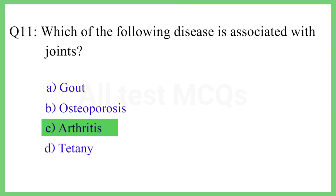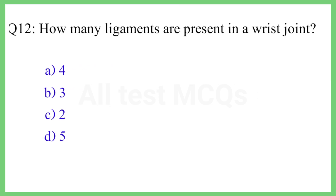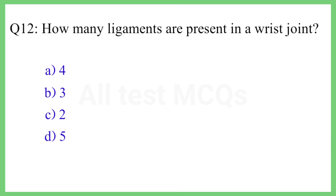Question No. 12. How many ligaments are present in a wrist joint? The correct answer is Option A: 4.